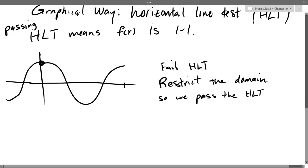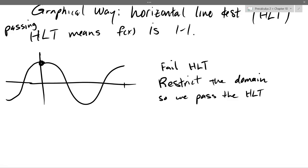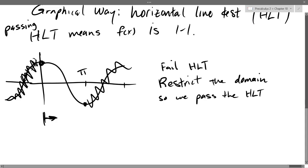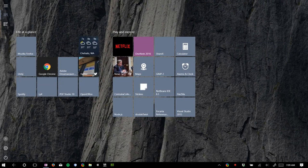To fix cosine failing the horizontal line test, we restrict its domain. We want to pass the HLT by keeping only a small interval of x values. Starting at 0 and going right, we ask how far we can go before failing again. If we pass π we start failing, so we restrict to the interval [0, π] and scrap everything outside that. On this restricted domain, cosine passes the horizontal line test and we can define an inverse.